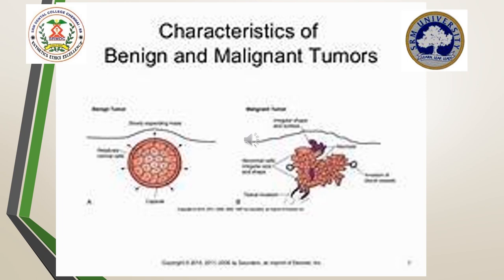As far as benign tumours are concerned, they closely resemble the normal cell of origin and have a very slow rate of growth. In malignancy, another important criteria is mitotic figures. In malignant tumours, the rate of mitotic division is very rapid compared to benign tumours where mitosis is practically very rare, and if present, it is of normal configuration — in contrast to malignant tumours where mitotic figures are very bizarre.